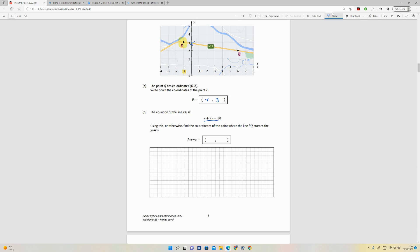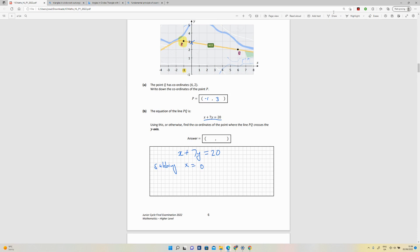PQ crosses the y-axis when x is zero. So you use this formula and set x to zero to work out the intersection of the y-axis. Sorry, I've put in 2 there, that should be zero. So by doing that then, it's going to be 0 plus 2y is equal to 20.